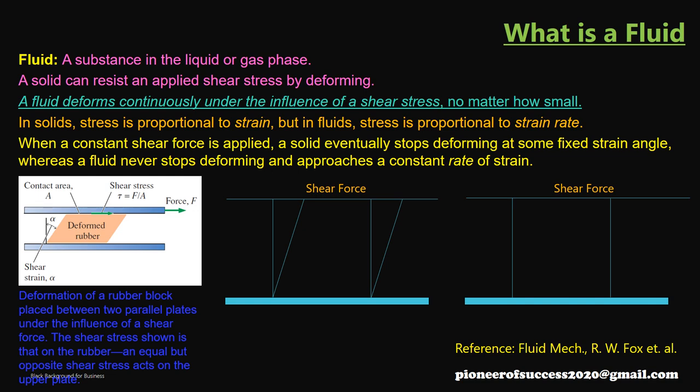Now in a liquid or fluid, what happens? We apply a constant shear force and with respect to time it keeps on deforming. At T1 the deformation is indicated by one line, at T2 by another, and at T3 there is further deformation. So as time progresses the fluid keeps on deforming — and this is the nature of a fluid. If you apply a shear stress and it continuously deforms with respect to time, that is a fluid.